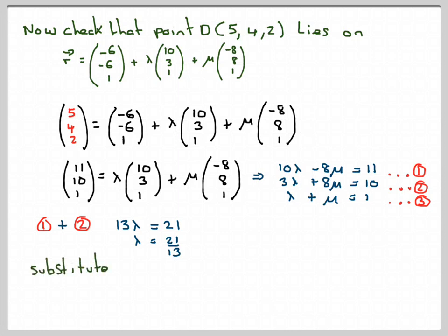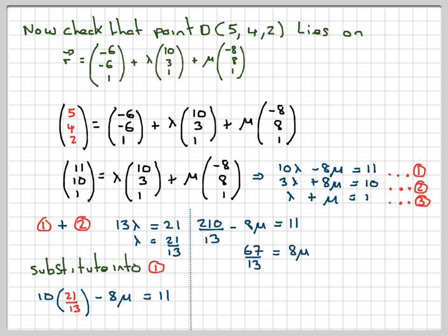We'll then substitute into equation 1. So we'll put the value in here. So we'll get 10 times 21 over 13 minus 8 mu is equal to 11. So that's going to give me 210 over 13 minus 8 mu is equal to 11. I'm going to take the 8 mu over here and 11 over here. So I'm going to do 210 over 13 minus 11, which gives me 67 over 13, is equal to 8 mu. And then we'll divide by 8. We get that mu is 67 over 104.